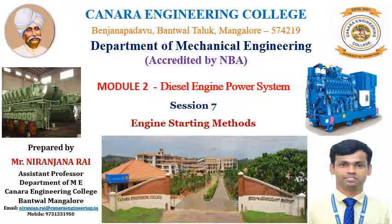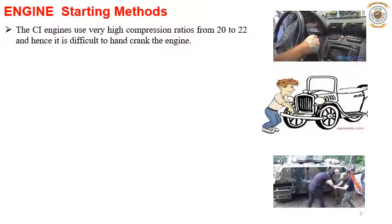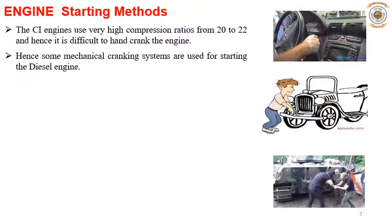In a diesel engine, which is a compression ignition engine, very high compression ratios from 20 to 22 are used, and hence it is very difficult to hand crank the engine. Especially in cold conditions, it is very difficult to start the engine.